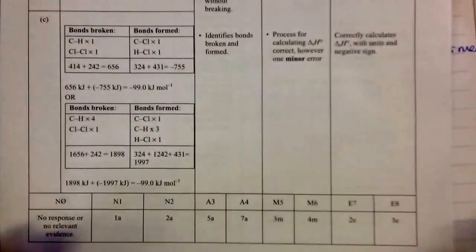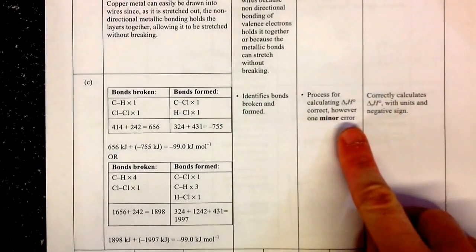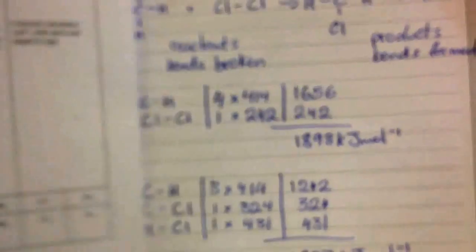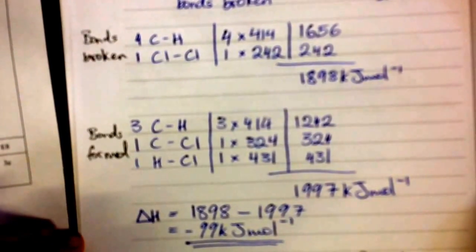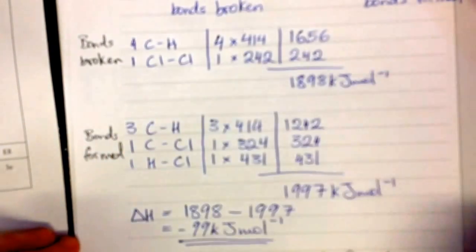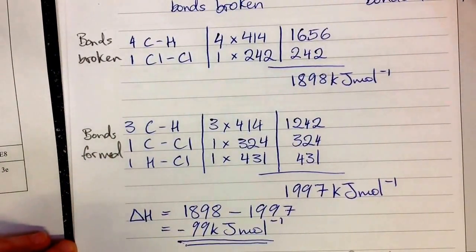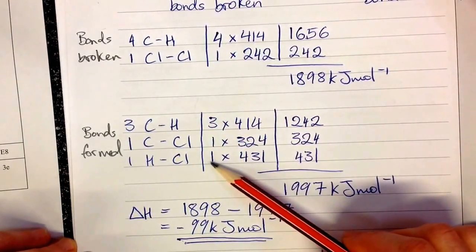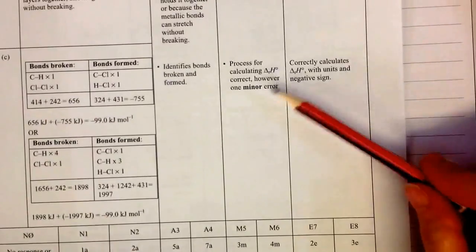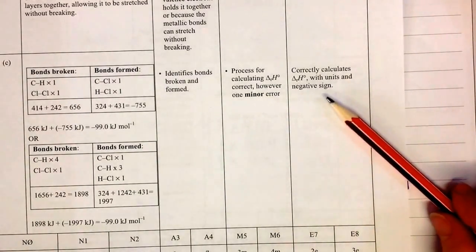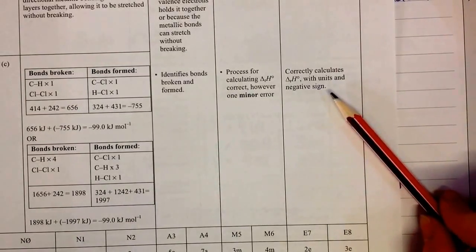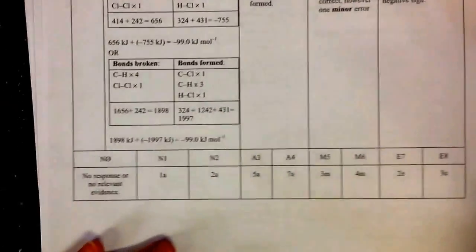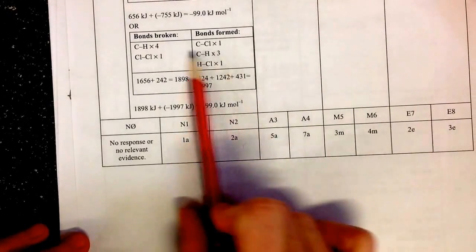So that's achieved criteria. Process for calculating delta H correct, however one minor error. So if I'd made an error in my calculations, say I'd multiplied this by 5 or something like that, that would be getting me a merit. Correctly calculates delta H with units and negative sign. So for example here, if you'd forgotten the negative sign or something like that, that would be the minor error. However, I got excellence on this question. And as you can see here, they have done it this way.